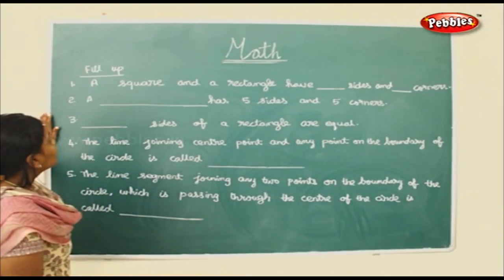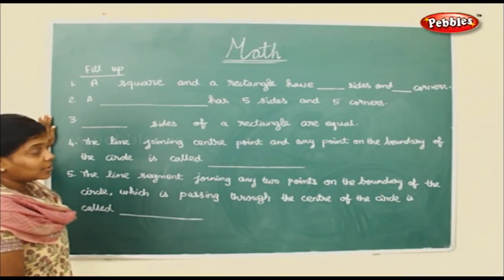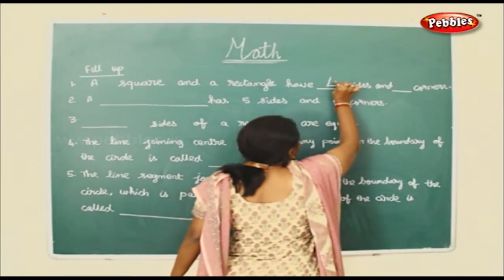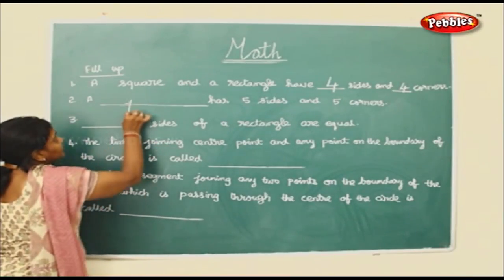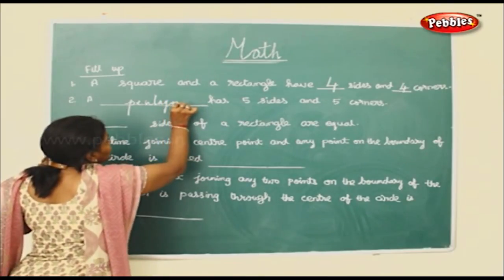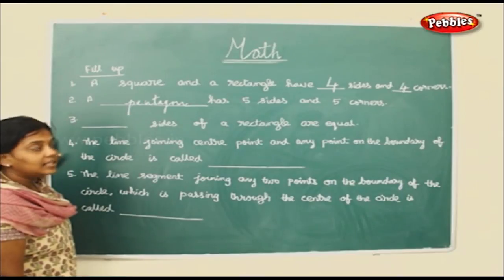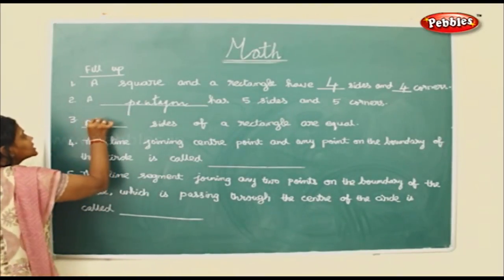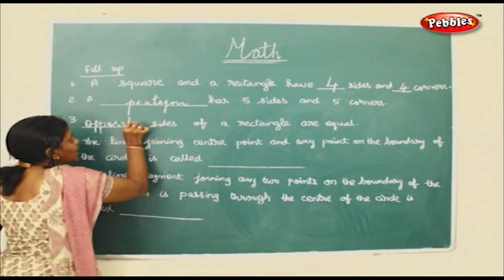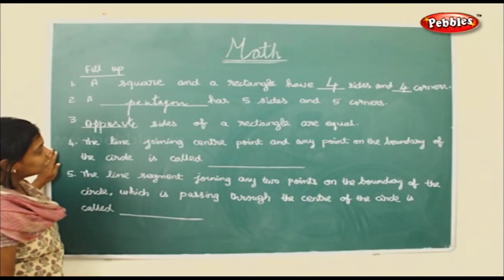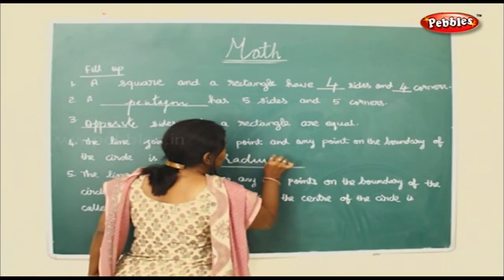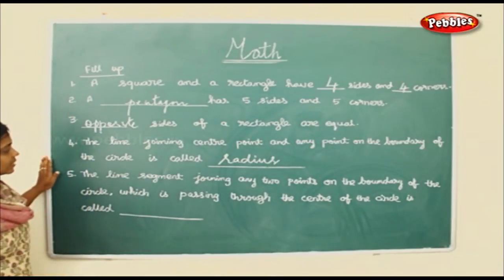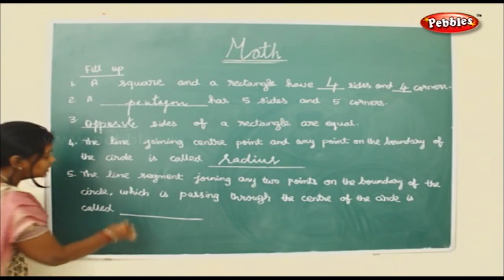Now we will fill in the blanks. A square and a rectangle have 4 sides and 4 corners. A pentagon has 5 sides and 5 corners. The opposite sides of a rectangle are equal. The line joining the centre point and any point on the boundary of the circle is called a radius. The line segment joining any two points on the boundary of the circle passing through the centre is called a diameter.